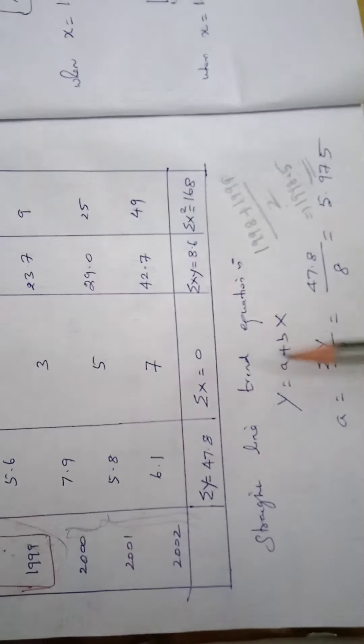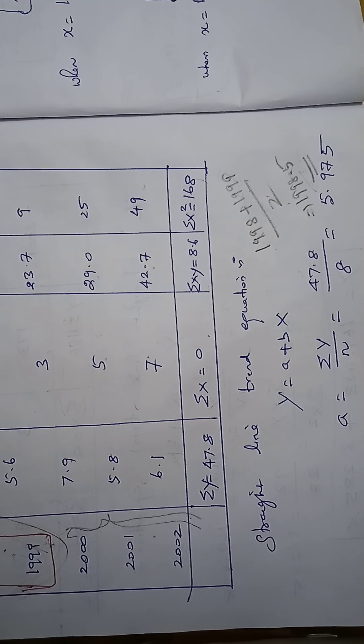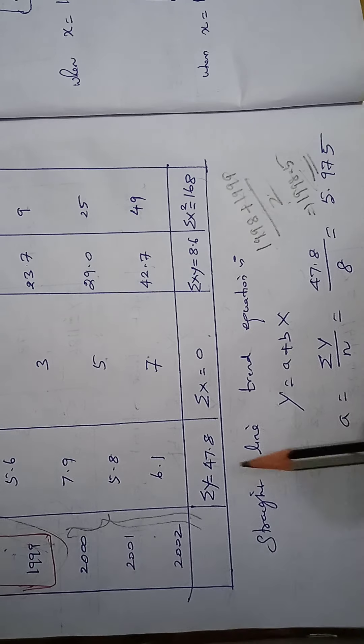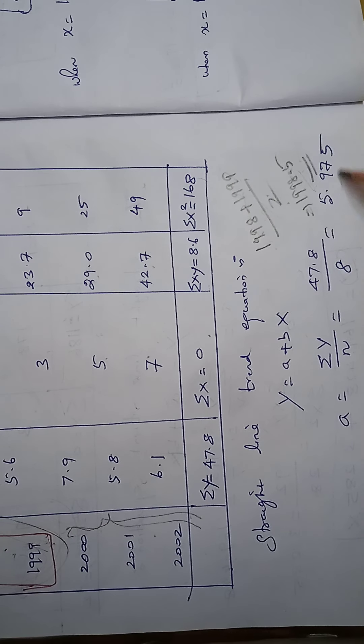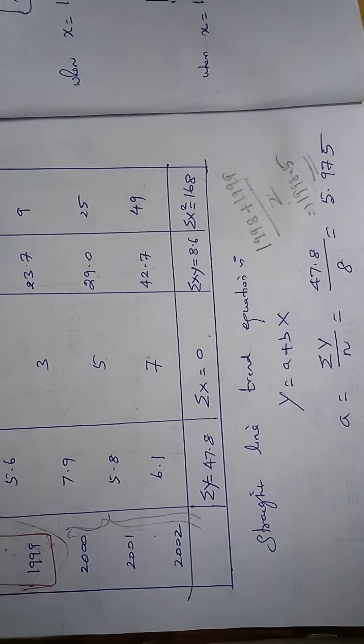So the straight line trend equation is Y equal to A plus BX. The formula is A equal to Sigma Y by N. Sigma Y value is 47.8 by number of years is 8. 5.975.